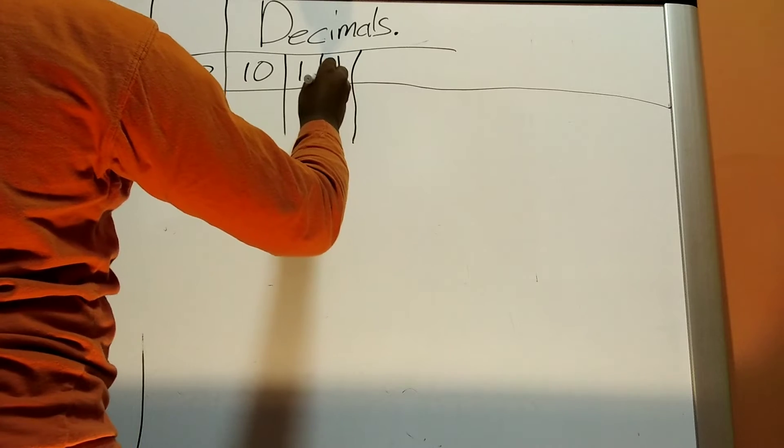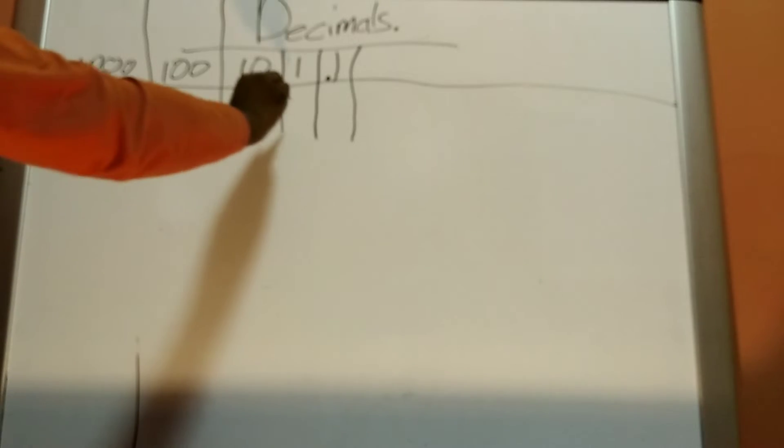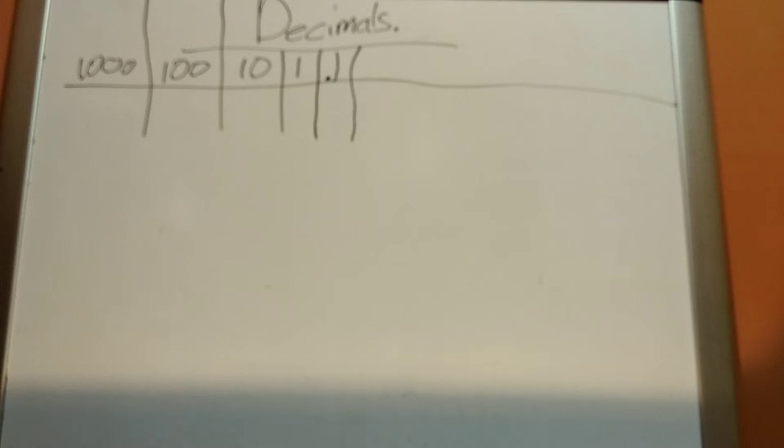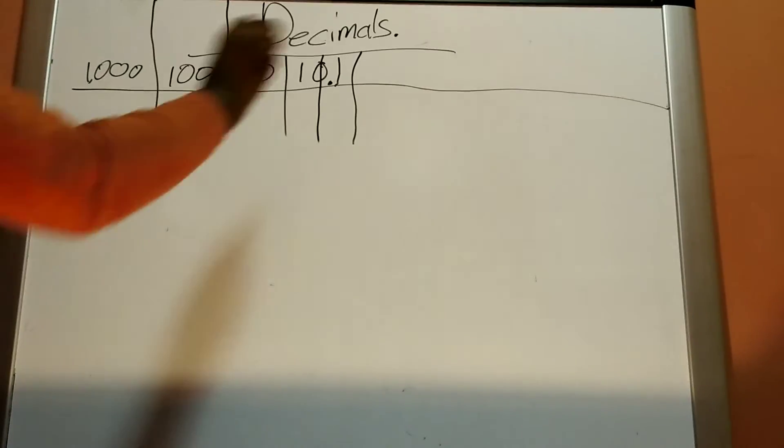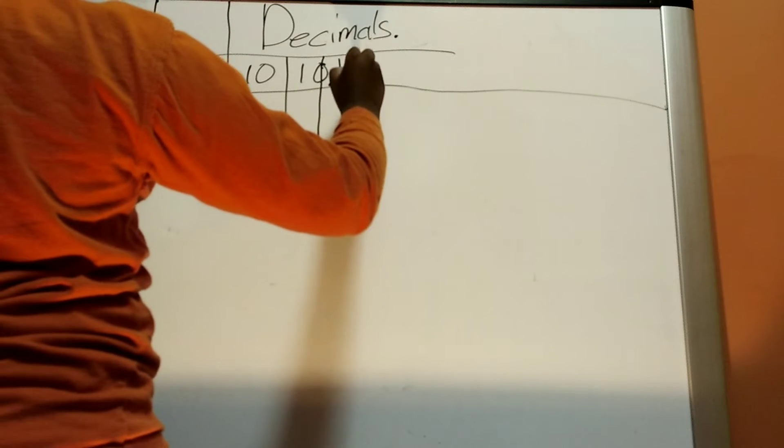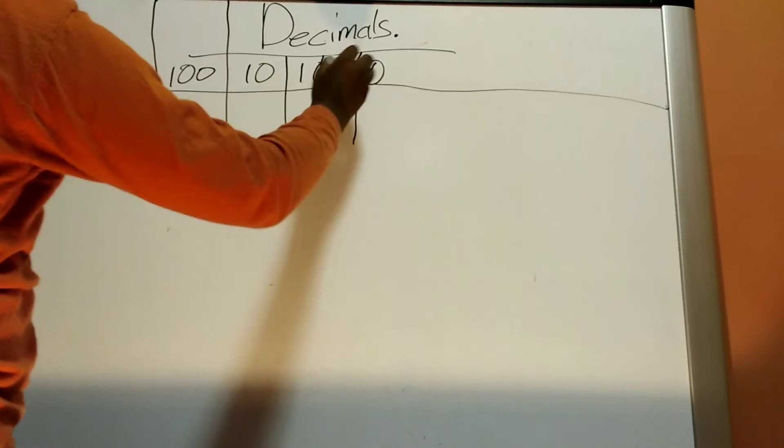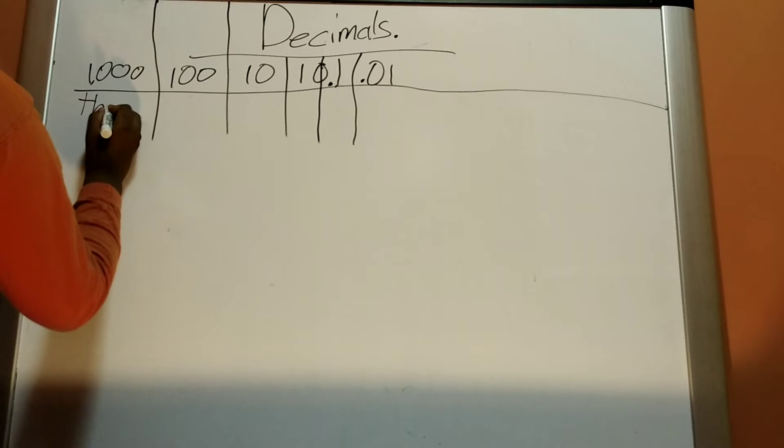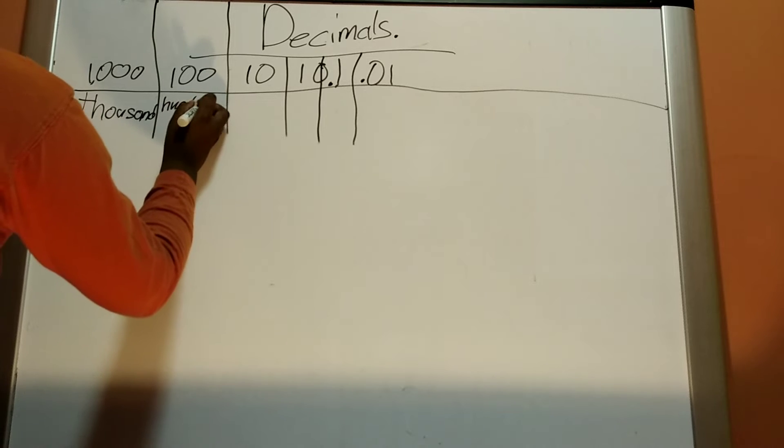But when you start to go right towards the number line, you start to have your tenths. You automatically skip your ones. Now, this is turned right into tenths. Since ones are always on the whole side, you would just skip that. And then here would be a zero right in the middle of both of them. And then, you would skip right over to tenths.